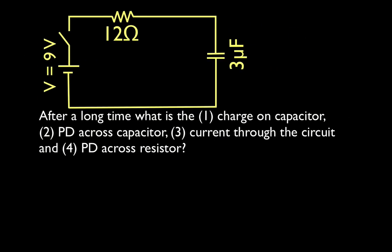Now we're going to talk about time equals infinity, or after a long time. What is the charge on the capacitor? What is the potential difference across the capacitor? What is the current through the circuit? And what is the potential difference across the resistor? The key here is that after a long time, the capacitor is fully charged, and when the capacitor is fully charged, there is no current flowing through the circuit. On the previous case we had current but no charge; now we have charge but no current.